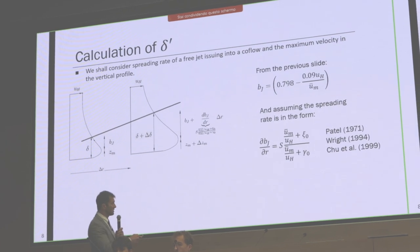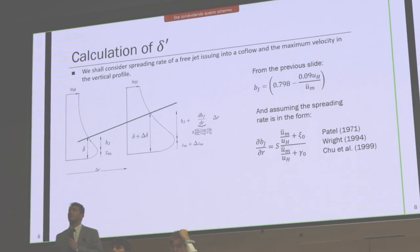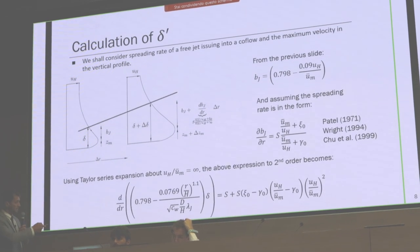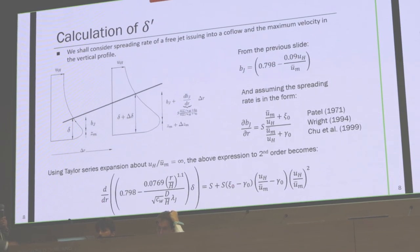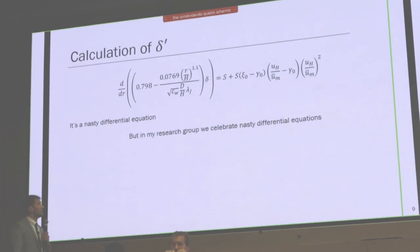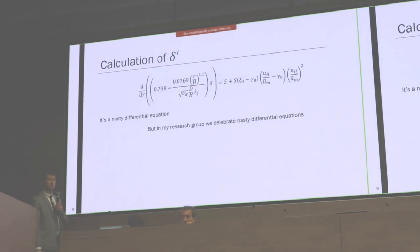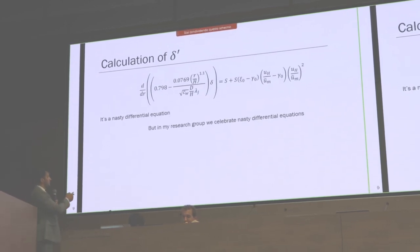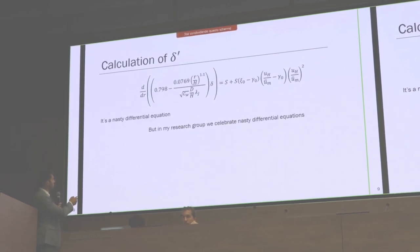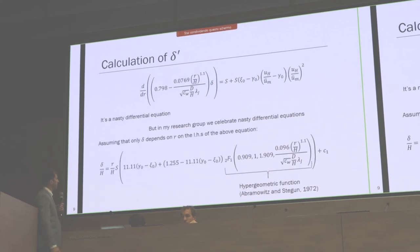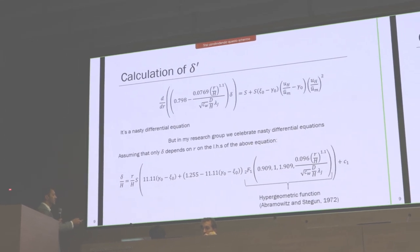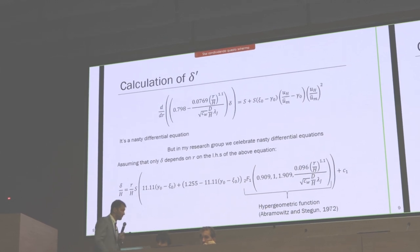To find these, we again use Taylor series expansion of this function and end up with a differential equation, which is very nasty. This differential equation cannot be solved using simple functions, except if we introduce the assumption that everything on the left hand side is constant with respect to R, except delta. Under these assumptions, this differential equation has the solution you can see here, where this is the hypergeometric function. You can read more about that here.